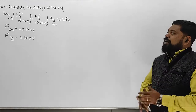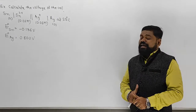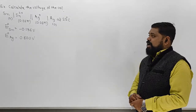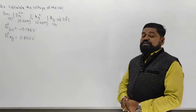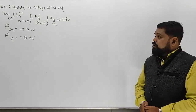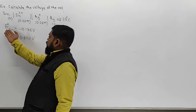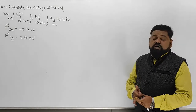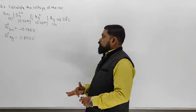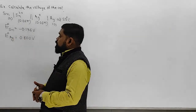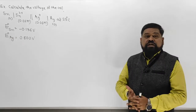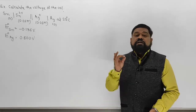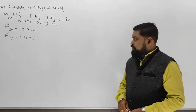Board pe likha hai numerical: 'Calculate the voltage of the cell.' Here voltage means we need to find its cell potential. A cell formula is given. E° of Sn is given - it is the standard electrode potential of Sn. Similarly, standard electrode potential of Ag is also given. Remember these values are always given as standard reduction potential values in the exam.